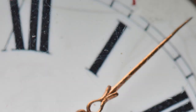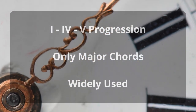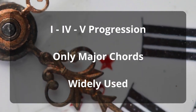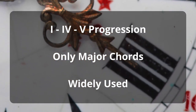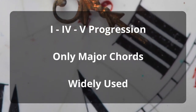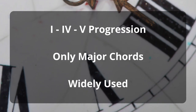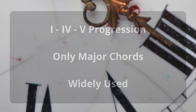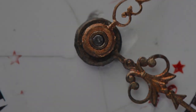The 1-4-5 chord progression is a very common three-chord progression that uses only major chords. It is an excellent place to start with chord progressions and songwriting. If you need to learn more about this, including help with the Roman numeral system, then check out our how-to-play 1-4-5 chord progression in any key video.